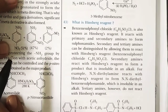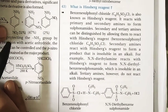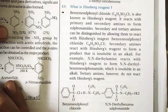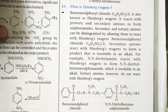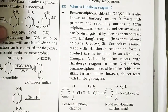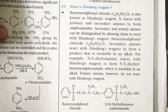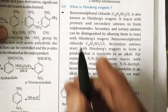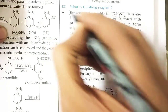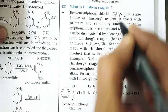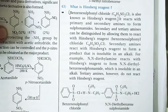Question 43: What is Hinsberg's reagent? In short, benzene sulfonyl chloride (C6H5SO2Cl) is known as Hinsberg's reagent.